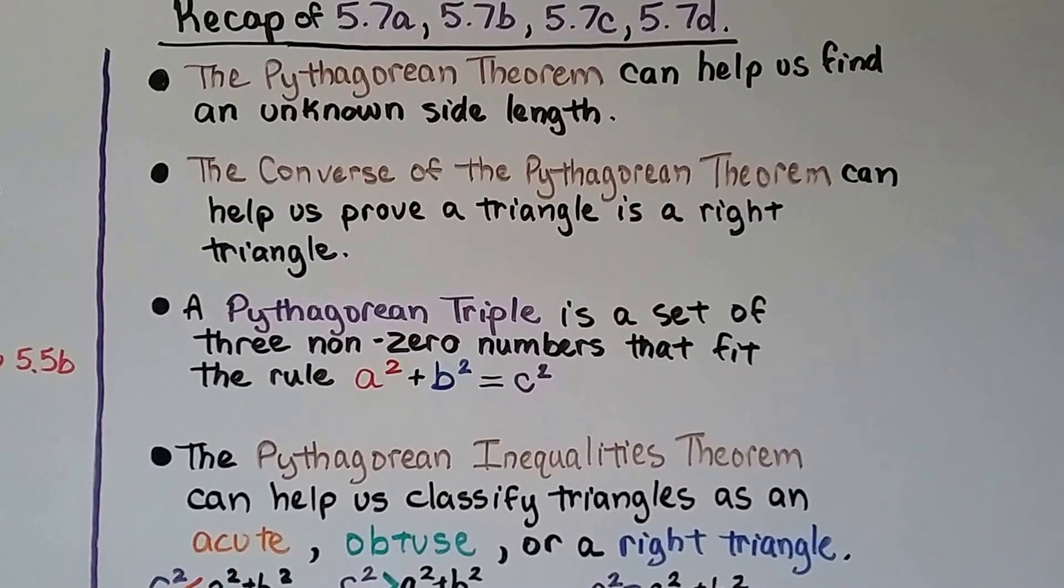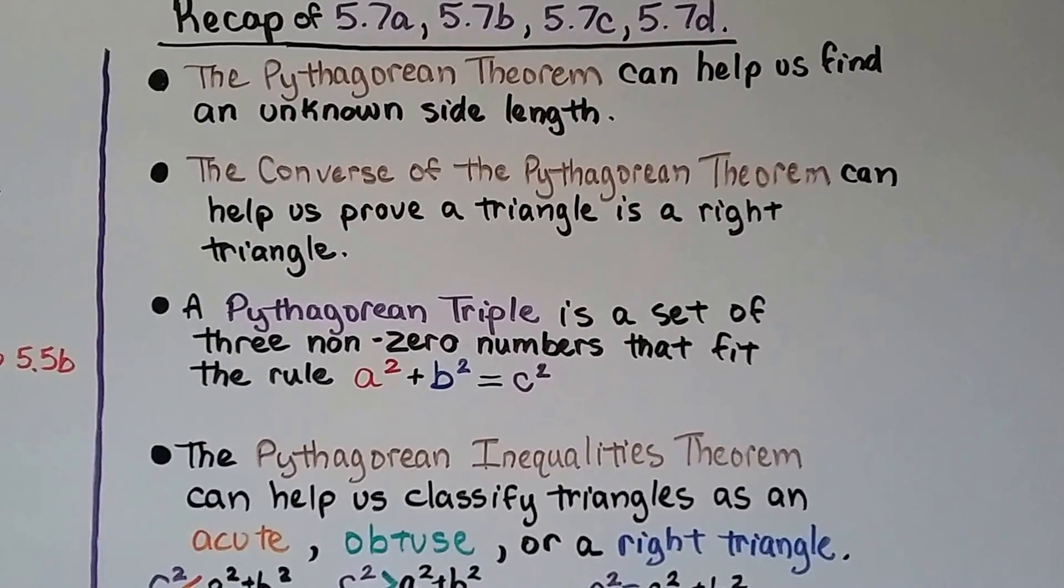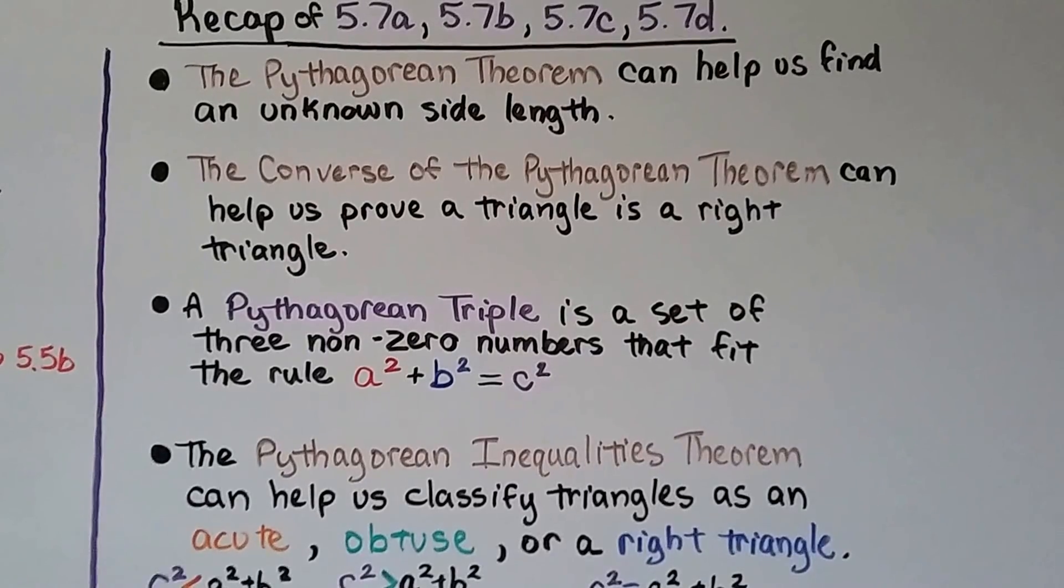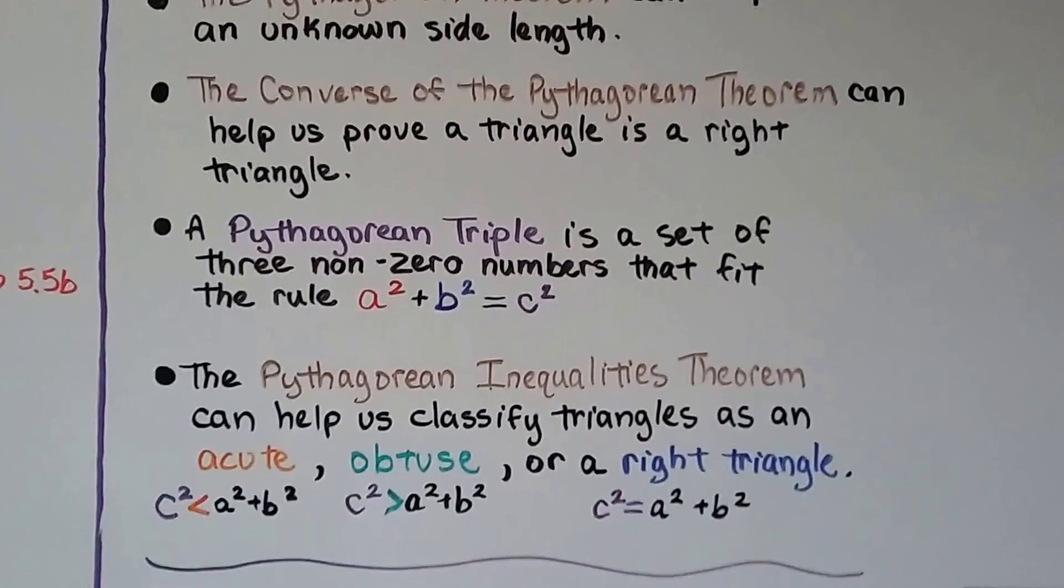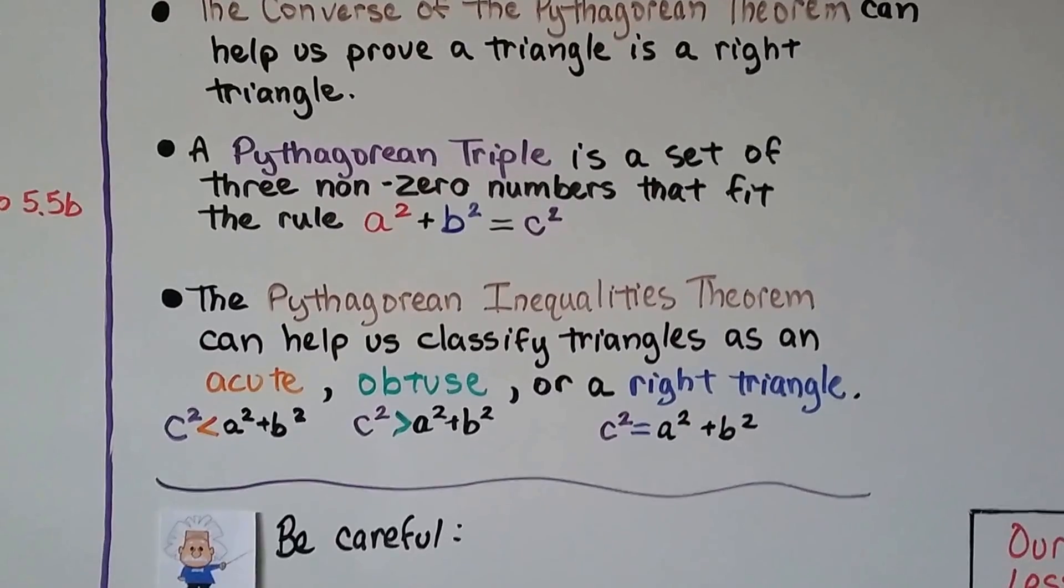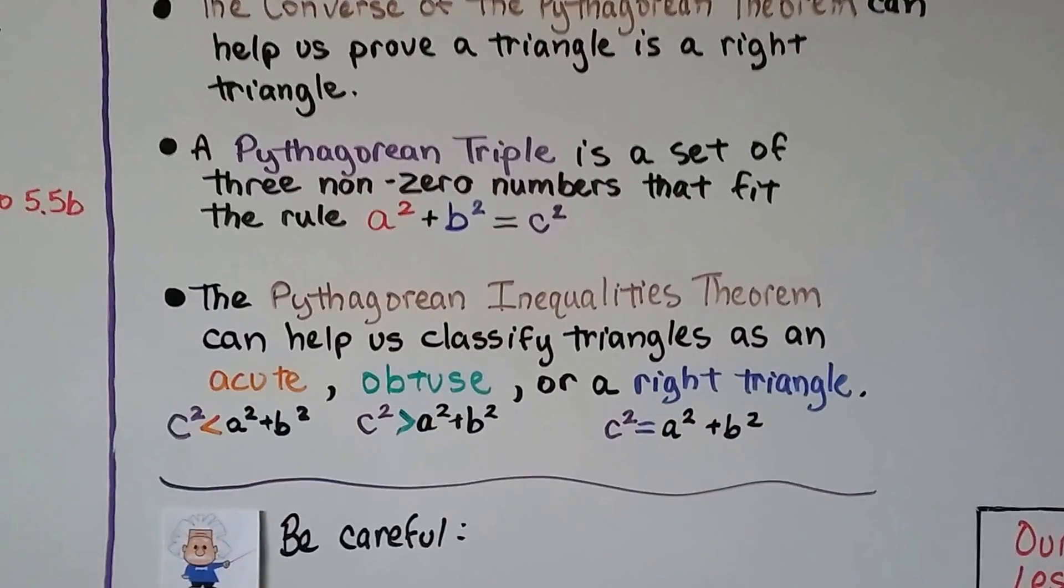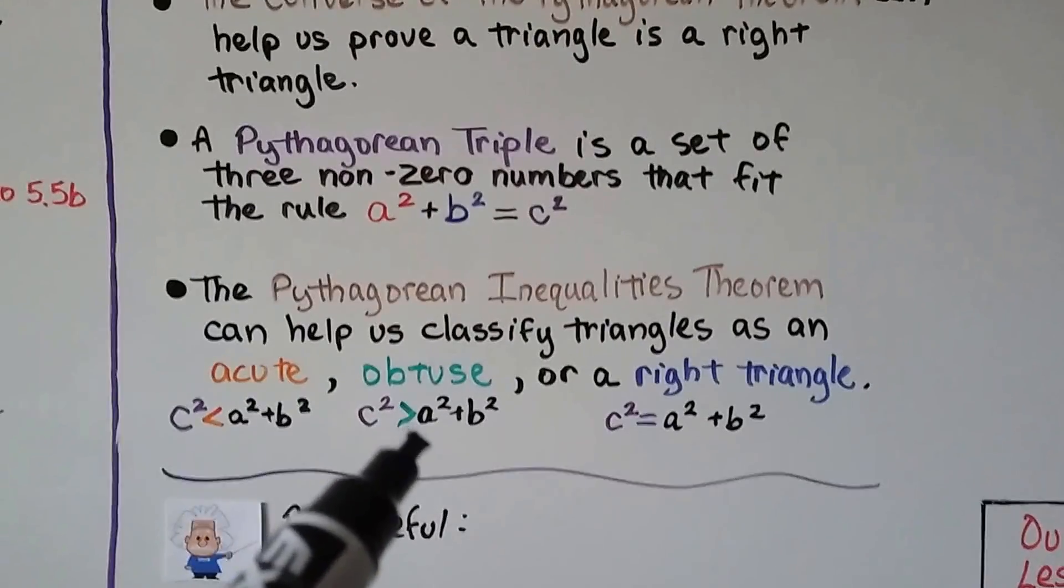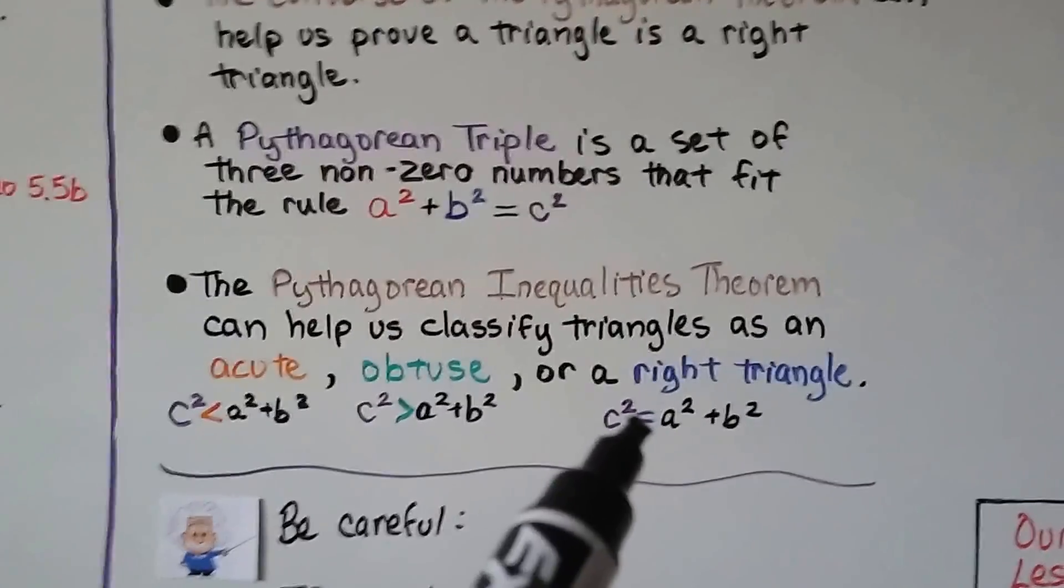We also learned about Pythagorean triples, which are sets of three non-zero numbers that fit the rule a² + b² = c². And the Pythagorean inequalities theorem helps us classify triangles as acute when c² < a² + b², obtuse when c² > a² + b², or right when c² = a² + b².